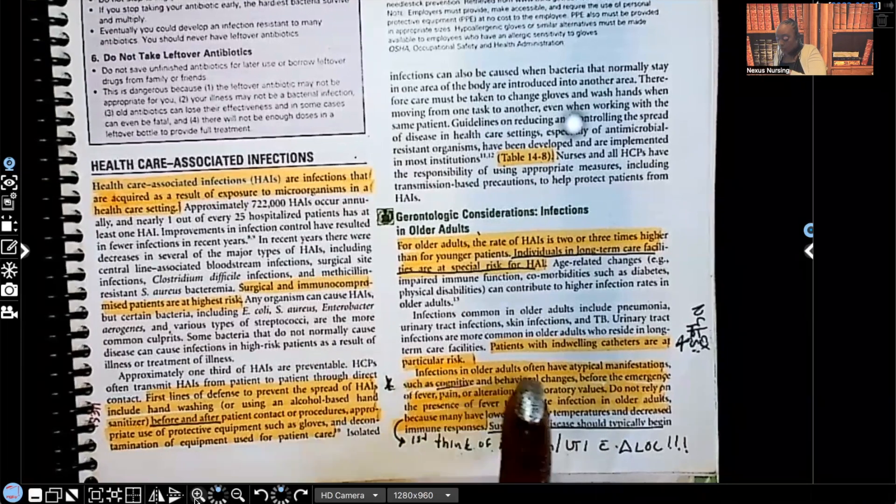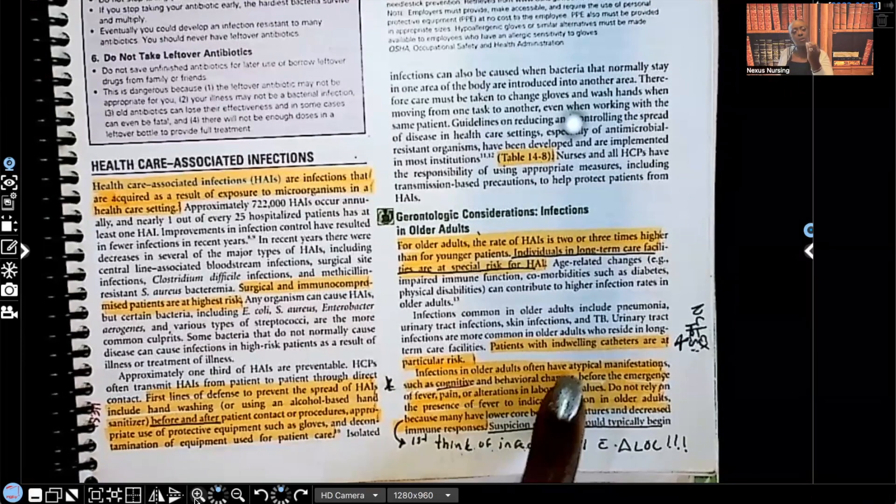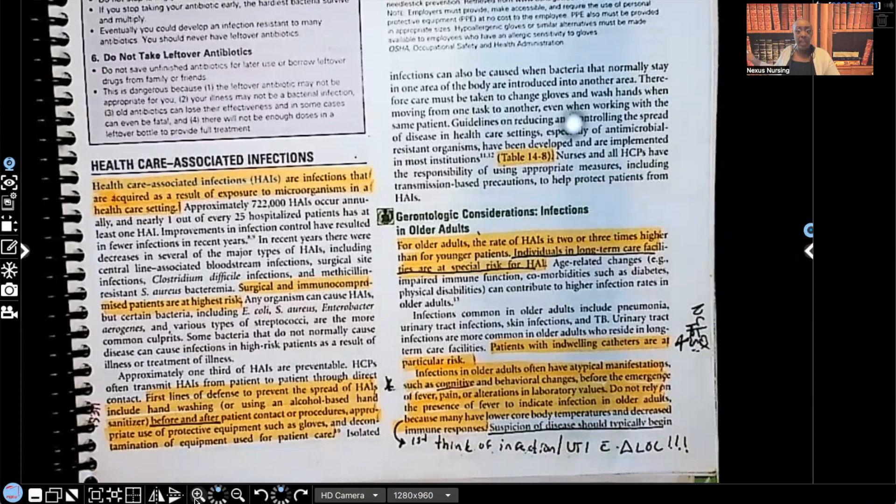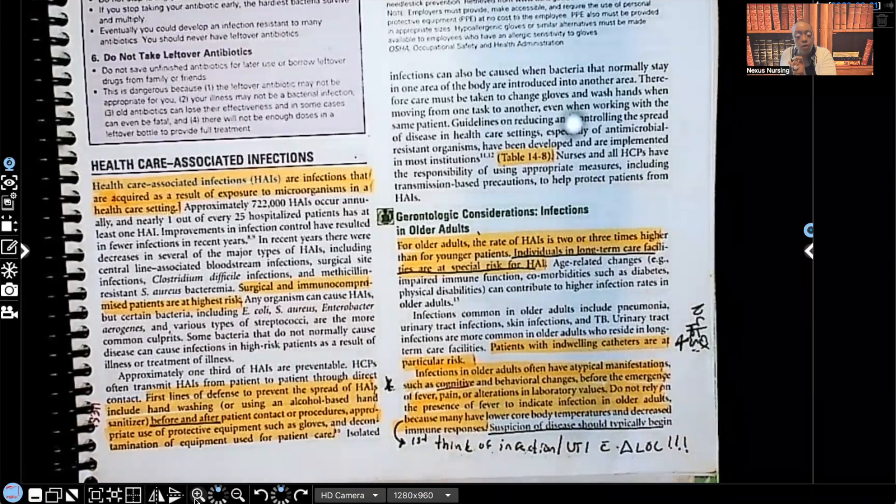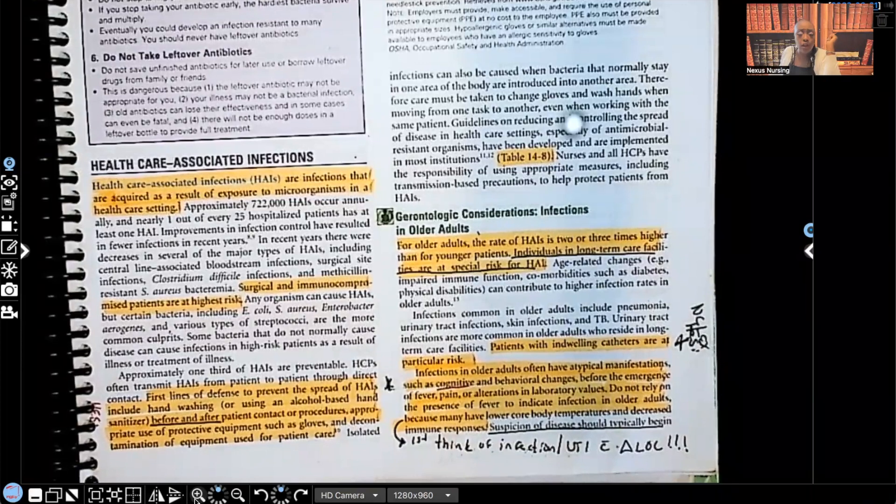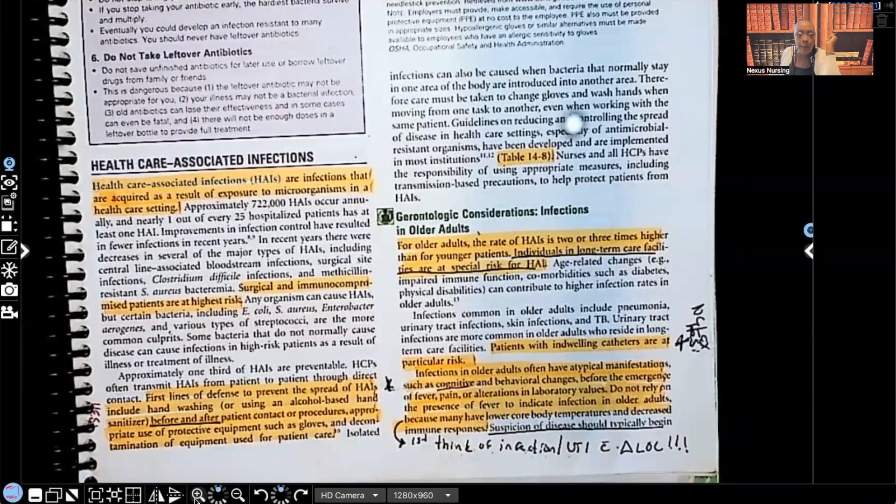Infections, older adults often have atypical manifestations. What do they mean by atypical? Well, your typical manifestations are going to be those normal signs and symptoms of infection, increased temperature, redness, inflammation, right? Those normal signs and symptoms. But when it comes to the older adult, we'll see atypical signs and symptoms. Matter of fact, one of the first signs and symptoms you've seen an older adult, if they were awake, alert, oriented times three, and all of a sudden they're confused. They think they see their grandma flying across the room, you better suspect infection.